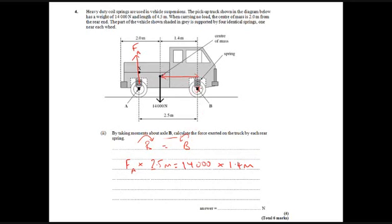So, the force of A must be 14,000 times 1.4 divided by 2.5. If you stick that in the calculator, then you get 7,840, which a lot of people write as the answer.